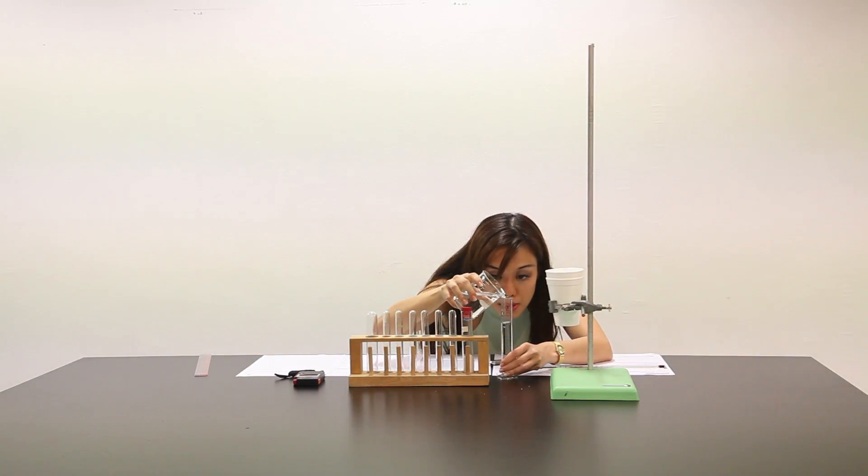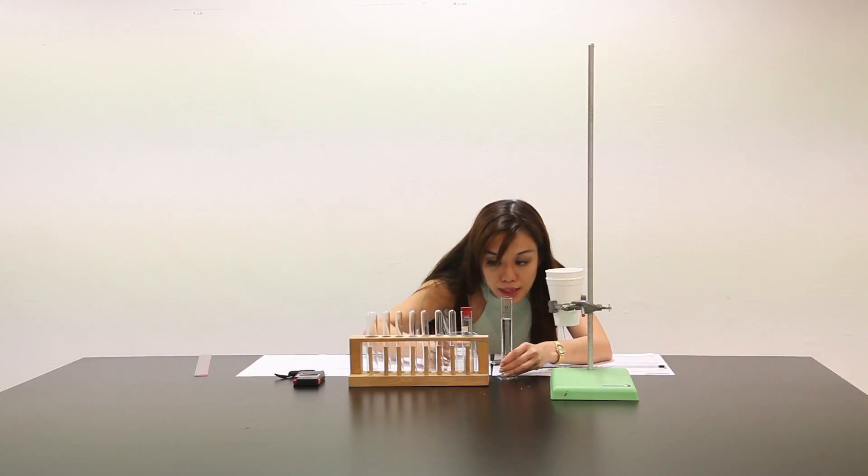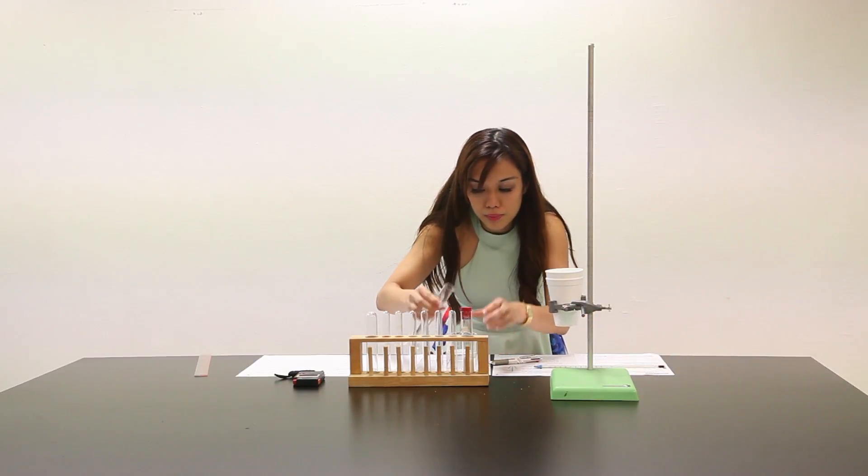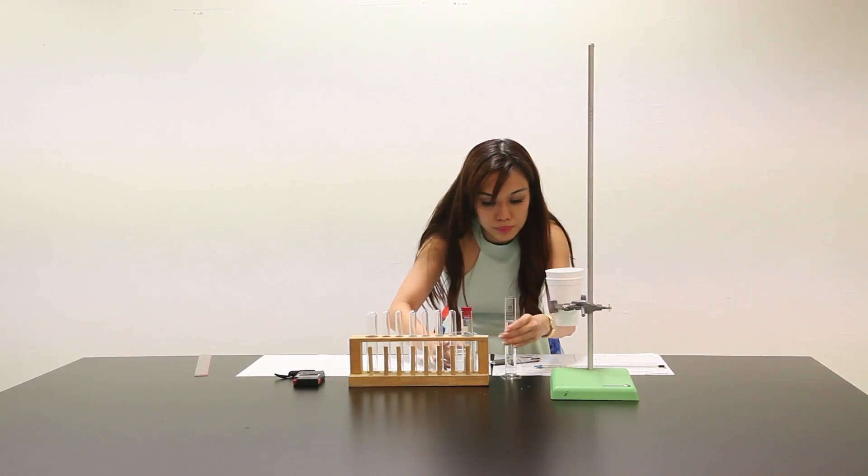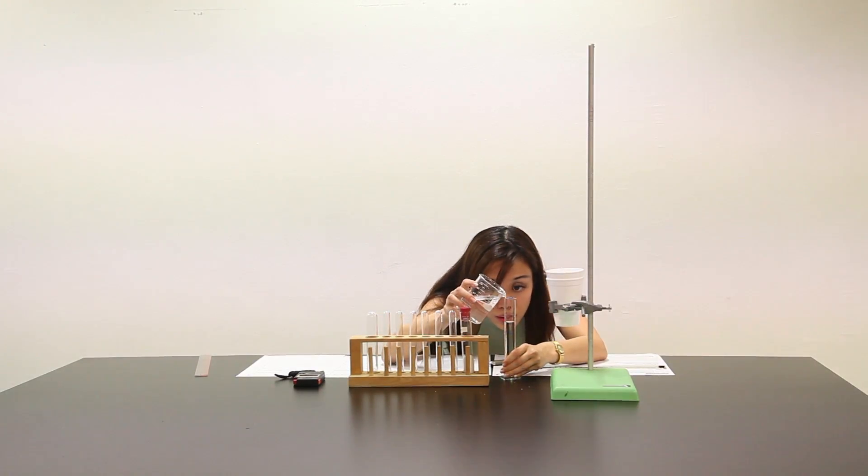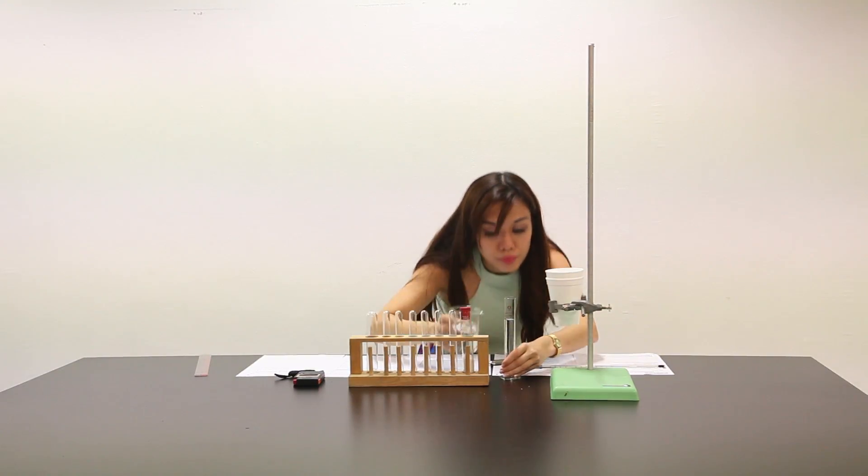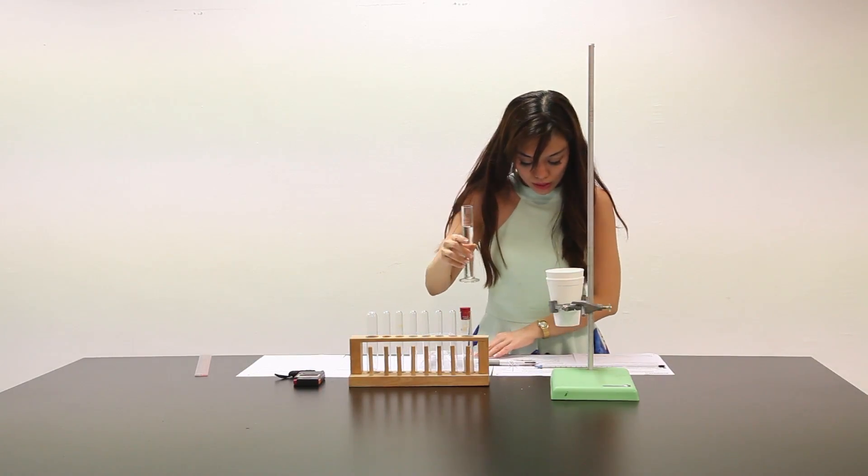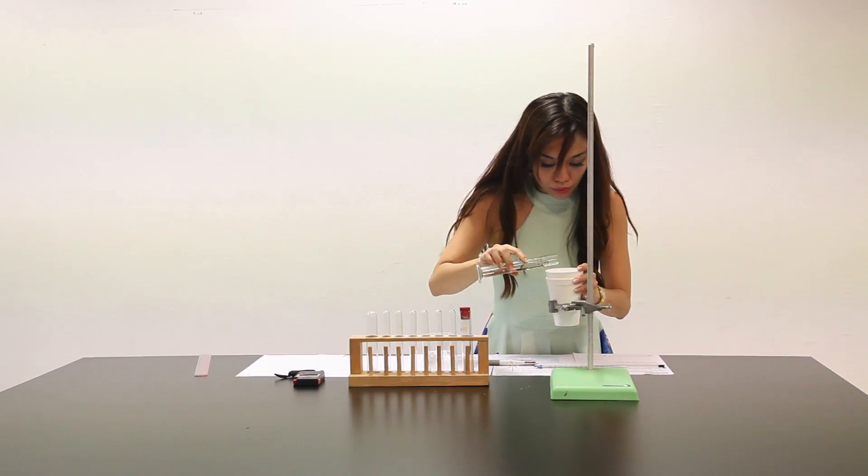Let's take note about the meniscus reading. Make sure that it's at eye level and if it overflows please pour it back. Okay, it's 50 cm³. I'm going to transfer this 50 cm³ into the styrofoam cup.